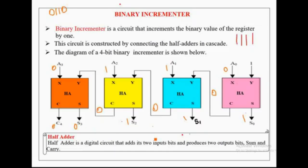The output generated by this incrementer through S0 to S3 gives the incremented value of the binary number. The input binary number 0110, when incremented by 1, gives 0111. This incremented value is equivalent to the output generated by this circuit. Similarly, an n-bit binary incrementer can be constructed by connecting n half adders in cascade. In this video we have learnt about binary incrementer. If you find this video useful, kindly subscribe to this channel. Thanks for watching.